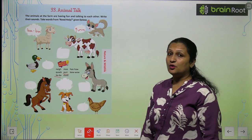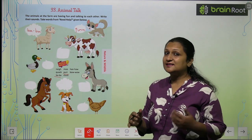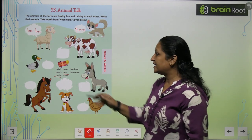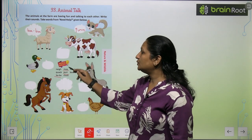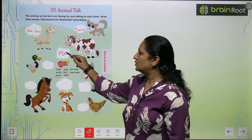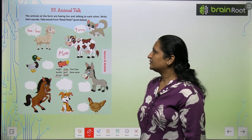Then, this is a cow. Cow कैसी sound produce करती है? Cow करती है — Moo. So you will write M-O-O here.